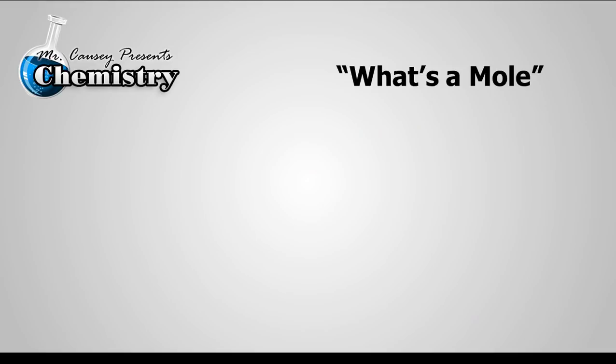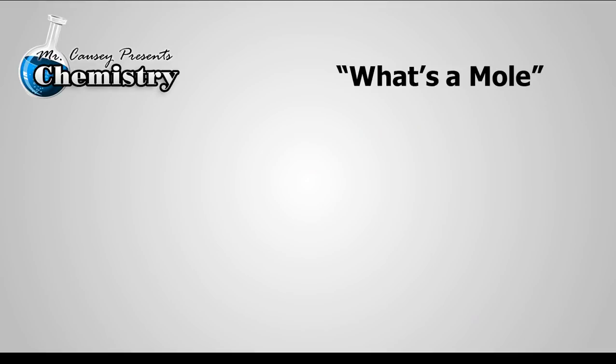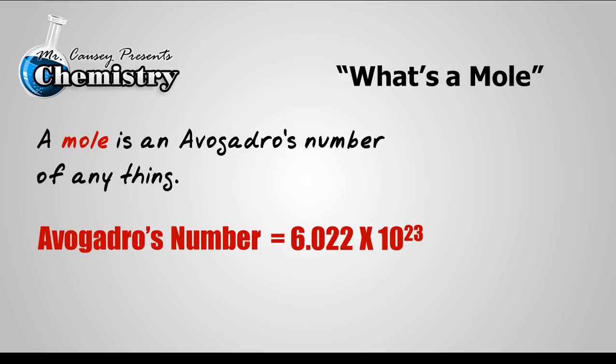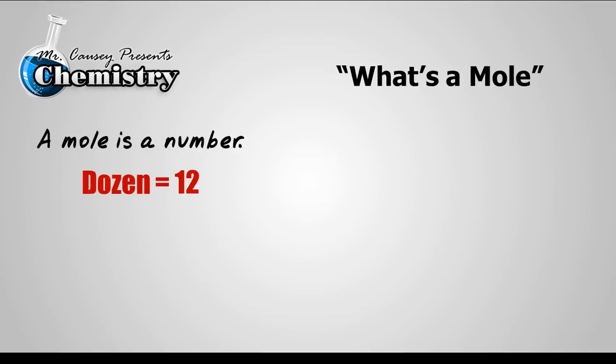So what's a mole? A mole is an Avogadro's number of anything. An Avogadro's number is 6.022 times 10 to the 23. That's an important number and that's what a mole is. And a mole is just a number. Like a dozen is 12 or a pair is 2. A mole is 6.022 times 10 to the 23, which is a humongous number. But that's because atoms are so small.